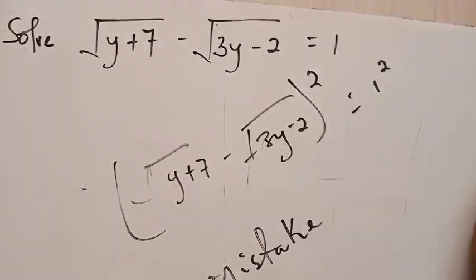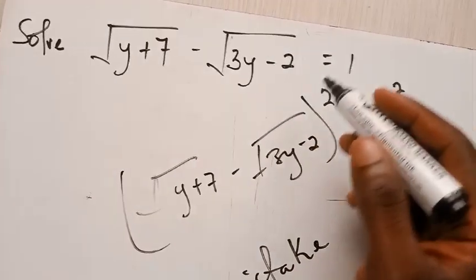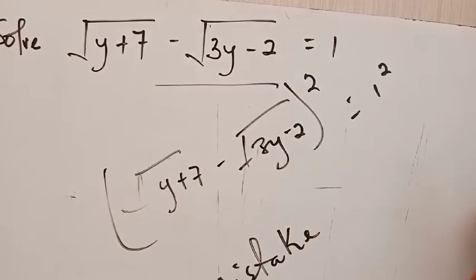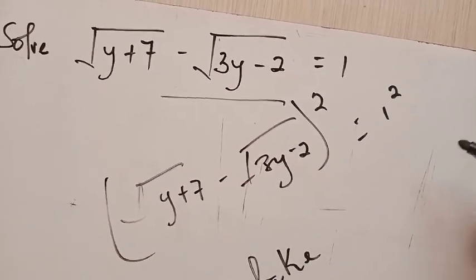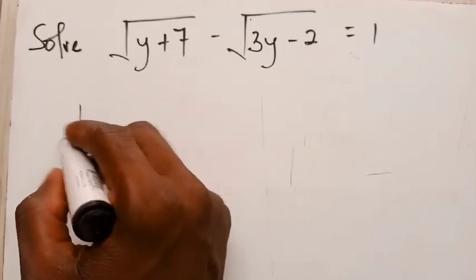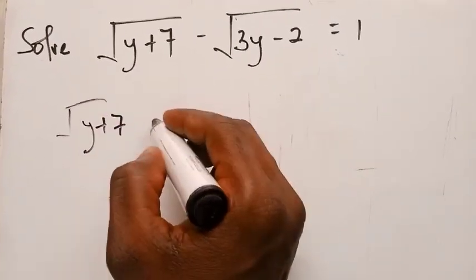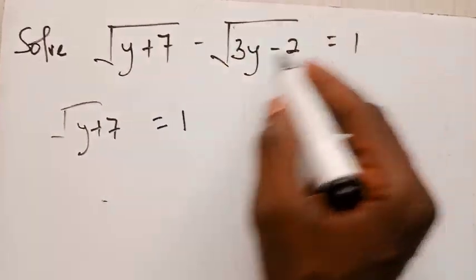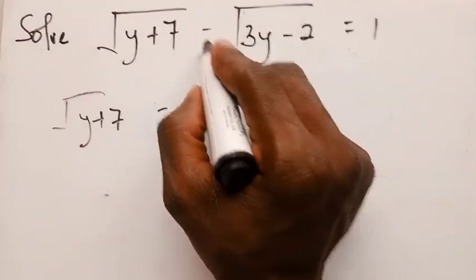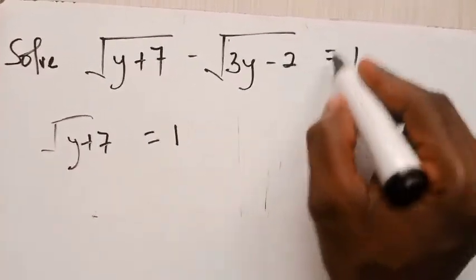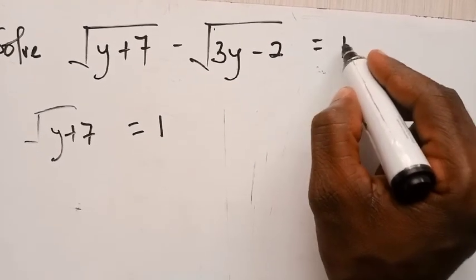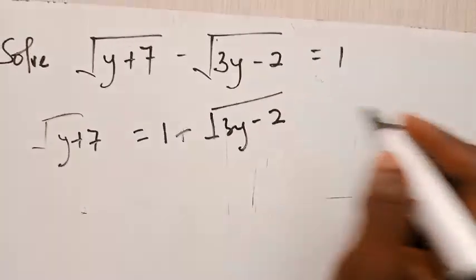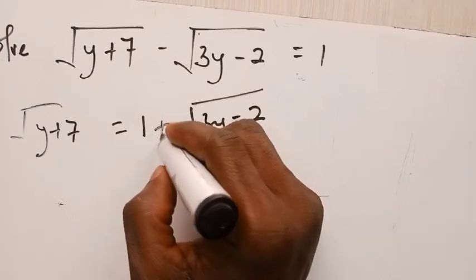So what would be the right way? The right approach to tackling this problem is to make sure that we move the second term to the other side of the equation. So this goes like this: root of (y plus 7) is going to be equal to... and the second term moves over. So this guy tends to be positive root of (3y minus 2).